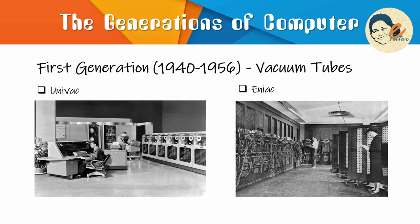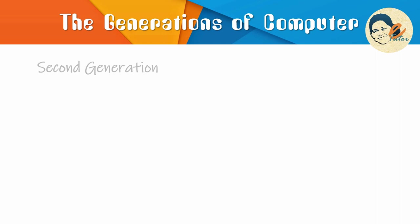The two notable machines of this era were UNIVAC and ENIAC. The UNIVAC is the first ever commercial computer, purchased in 1951 by a business named the US Census Bureau. Now let's move to the second generation of computers.